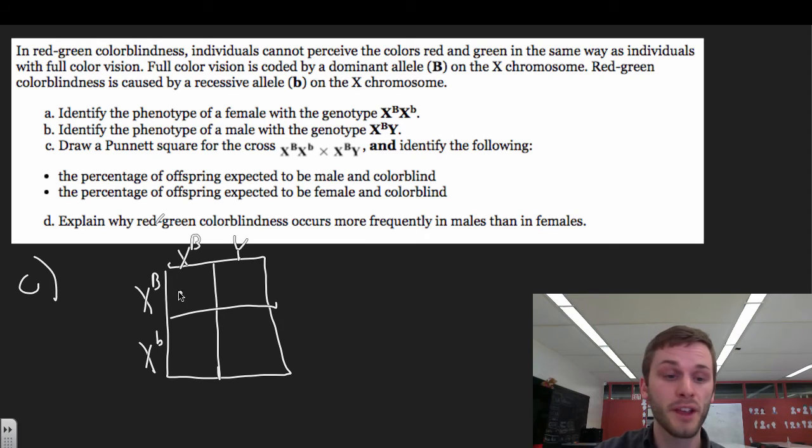So then we just cross this up like a normal Punnett square. We have X big B, X big B, X big B, Y. Make that look like an X there. And then we have X big B, and then X little b, and then we have X little b, and then Y.